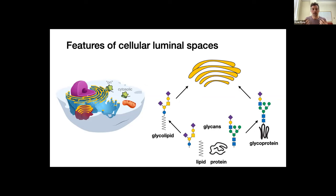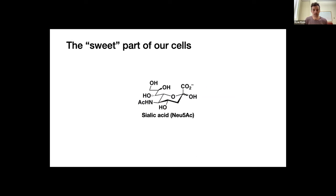The general idea is that glycans are another biopolymer that can be conjugated to proteins and lipids, giving you glycoproteins and glycolipid conjugates — glycoconjugates. They're concentrated, formed, remodeled, and trafficked through luminal and membrane-enclosed spaces like the Golgi, ER, and endosomes. Just for review, because it'll be important for how we think about the glycoRNA.